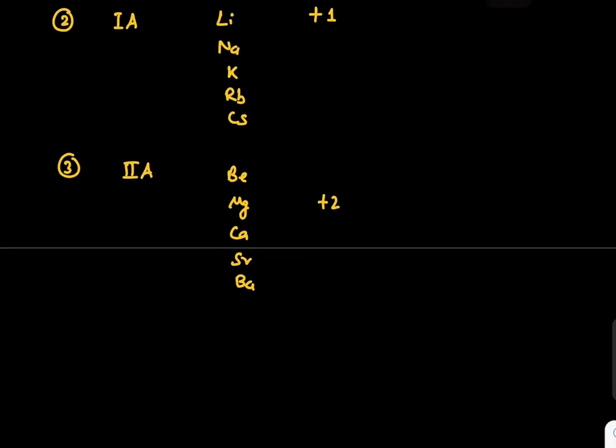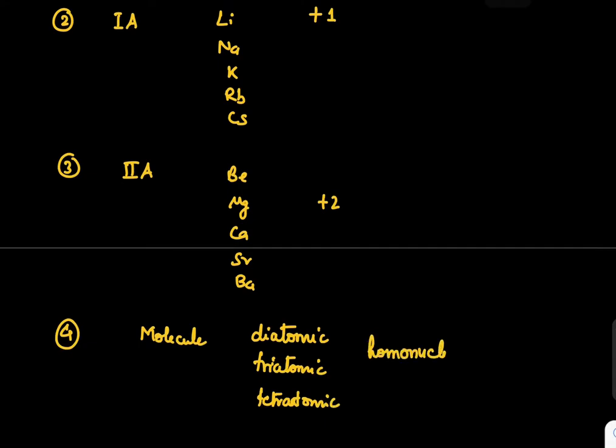Whenever we have any molecule which is diatomic, triatomic, or tetraatomic, but it is homonuclear - what is homonuclear? H2, O3 - these are all diatomic or triatomic. Water is also triatomic but water is heteronuclear; it has different members, not the same thing repeated.